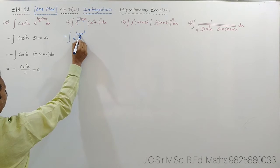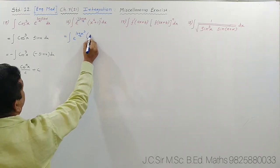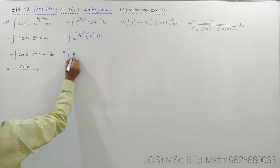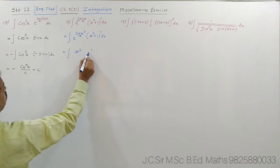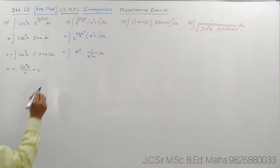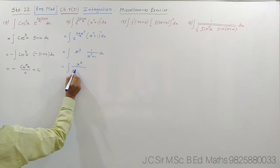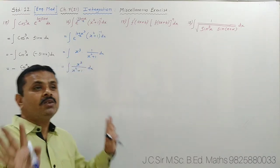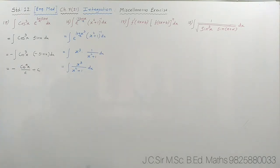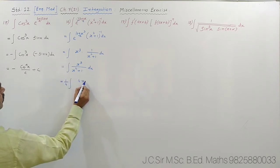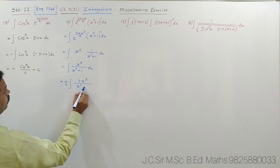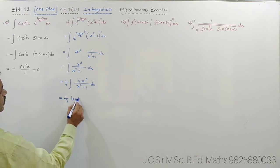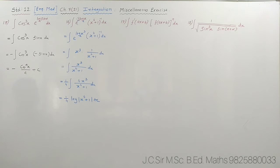Here we have x³/(x⁴+1). It is x⁴+1 raised to minus 1 times x³ dx. The derivative of x⁴ is 4x³ — we have x³ but need the factor 4, which is a constant. So divide and multiply by 4: (1/4) · ∫ 4x³/(x⁴+1) dx. Now the derivative of the denominator is in the numerator. By the log formula ∫ f′(x)/f(x) dx = log|f(x)|, the answer is (1/4)·log|x⁴+1| + C.